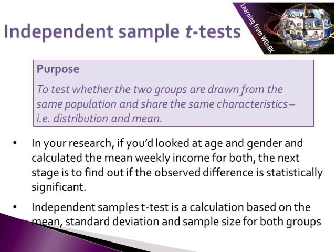Previously, in one sample tests, we were examining whether a sample was part of a population or not. With two sample tests, we are looking at something slightly different. We want to compare whether two groups have some trait that are sufficiently similar that they do or do not belong to the same population. So is the difference in means for two groups sufficiently large that we can say they are from two separate populations? The t-test assesses whether the means of two groups are statistically different from each other, and this analysis is appropriate when you want to compare the means of two groups.